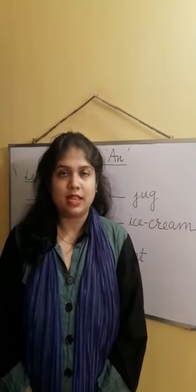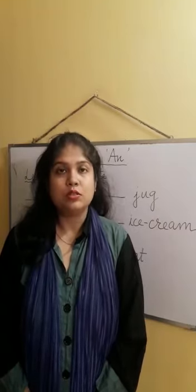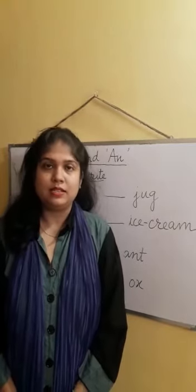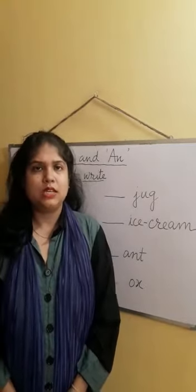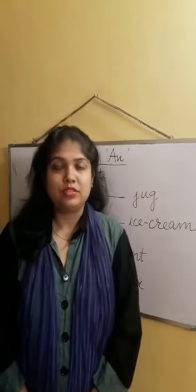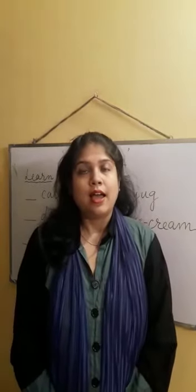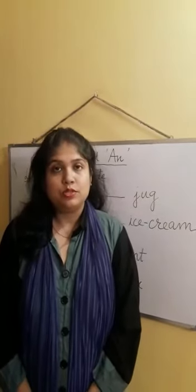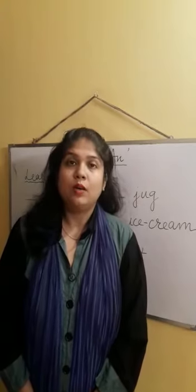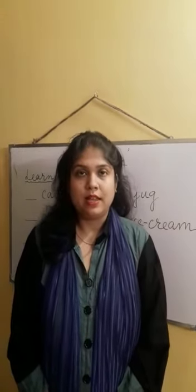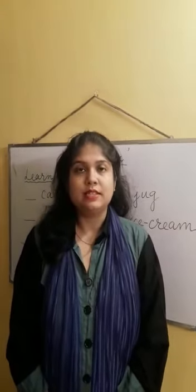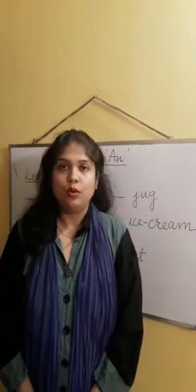We will write A where the word has a consonant in the beginning - that is B, C, D, F, G, H. And we will use An where the word has a vowel in the beginning, a letter vowel - that is A, E, I, O, U.